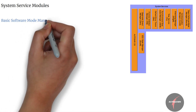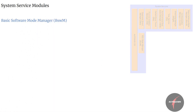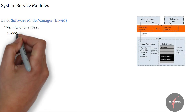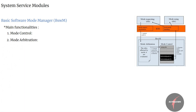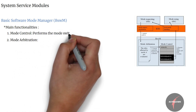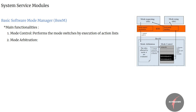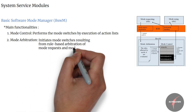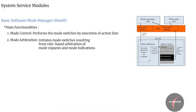Firstly, the Basic Software Mode Manager (BSW-MM). It performs two main functionalities: mode control and mode arbitration. During mode control, the BSW Mode Manager performs mode switches by execution of action lists containing mode switch operations of other BSW modules. During mode arbitration, it initiates mode switches resulting from rule-based arbitration of mode requests and mode indications received from software components or other software modules.